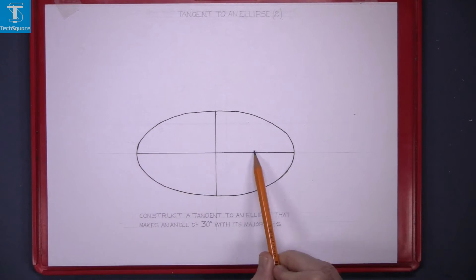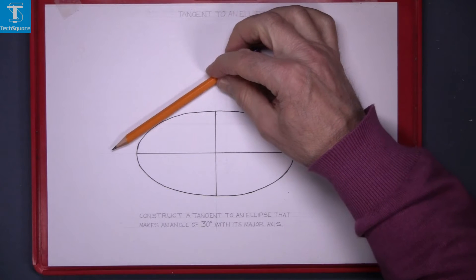So we have the major axis here, so the tangent is going to be at an angle like that.